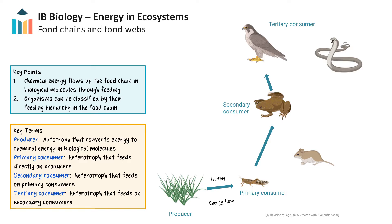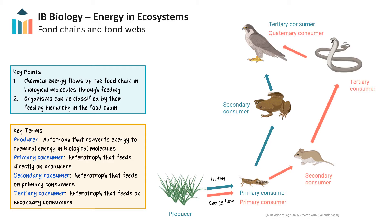However, in food webs, organisms can have several different types of feeding relationships, which results in several different classifications, as shown here. Notice the hawk is a tertiary consumer in one food chain labeled in blue, and a quaternary consumer in the food chain labeled in red.